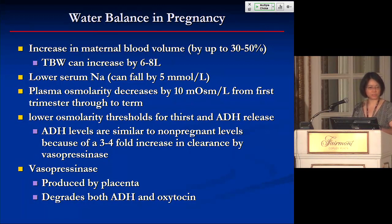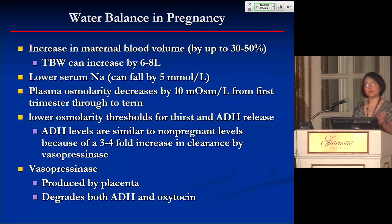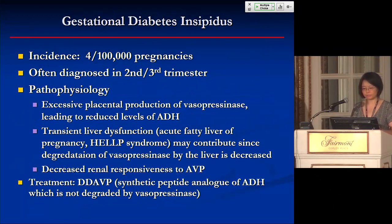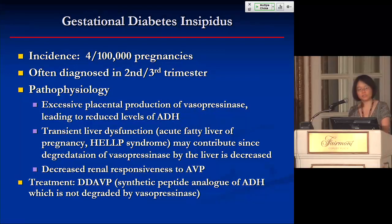Increased vasopressinase production is more common in multiple pregnancies carrying twins and triplets, and as pregnancy progresses. Even after delivery and removal of the placenta, some lingering vasopressinase can persist, so women with vasopressinase-related increased urine output can have polyuria for a few weeks post-pregnancy. Vasopressinase is an enzyme that degrades both ADH and oxytocin. Vasopressinase-induced polyuria is known as gestational diabetes insipidus, with an incidence of about 4 in 100,000 pregnancies, often diagnosed in the second and third trimester.